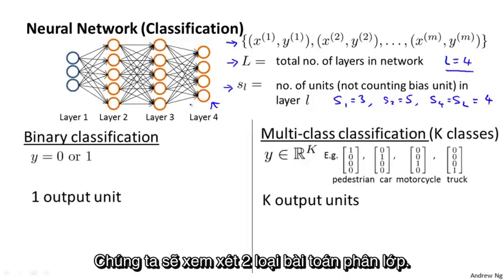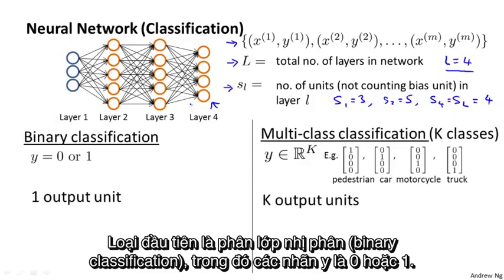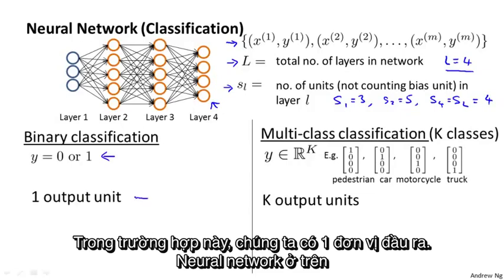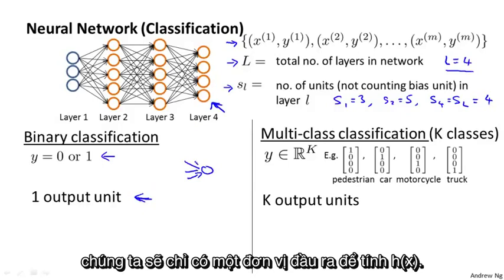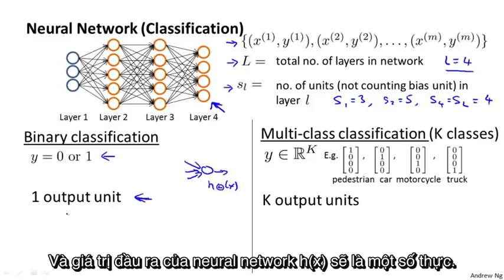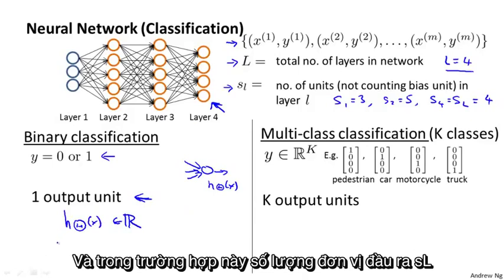We're going to consider two types of classification problems. The first is binary classification, where the labels y are either 0 or 1. In this case, we would have one output unit. So this neural network on top has four output units, but if we had binary classification, we would have only one output unit that computes h(x).